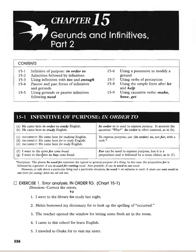'For' can be used to express purpose, but it is a preposition and must be followed by a noun object. For example: 'I went to the store for some bread.' Compare: 'I went to the store to buy some bread' — here 'to buy' is the infinitive of purpose.